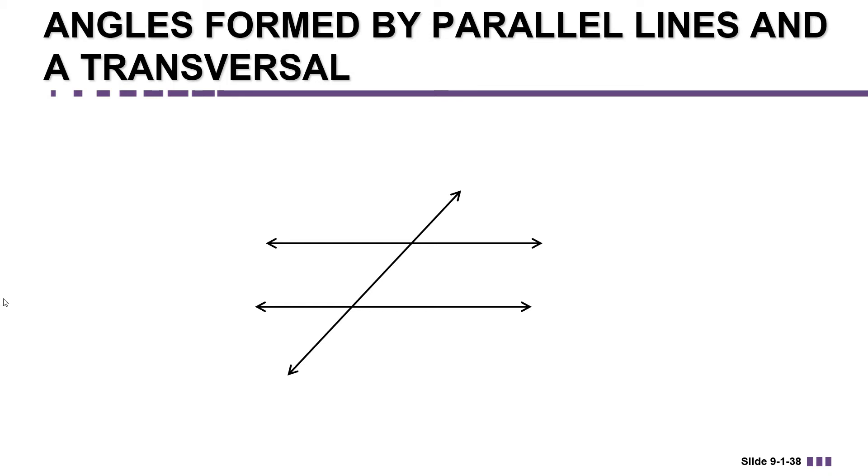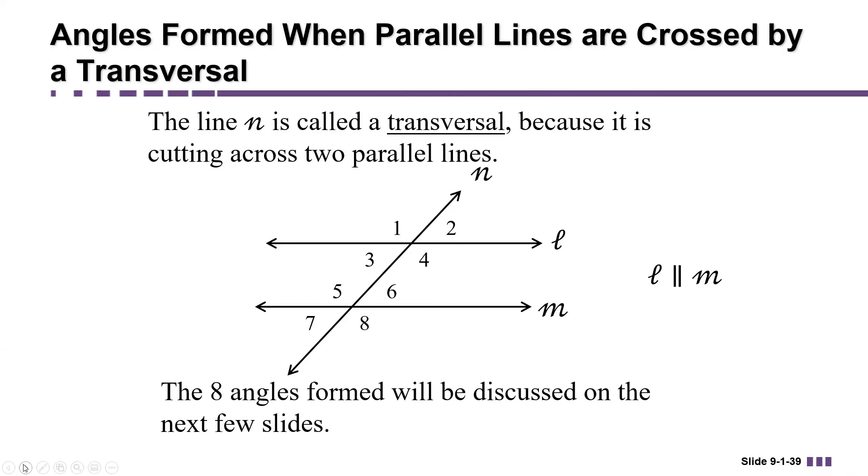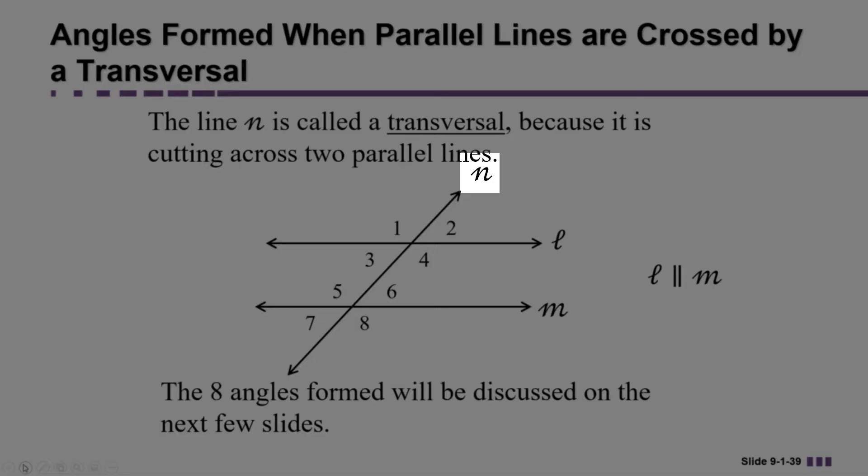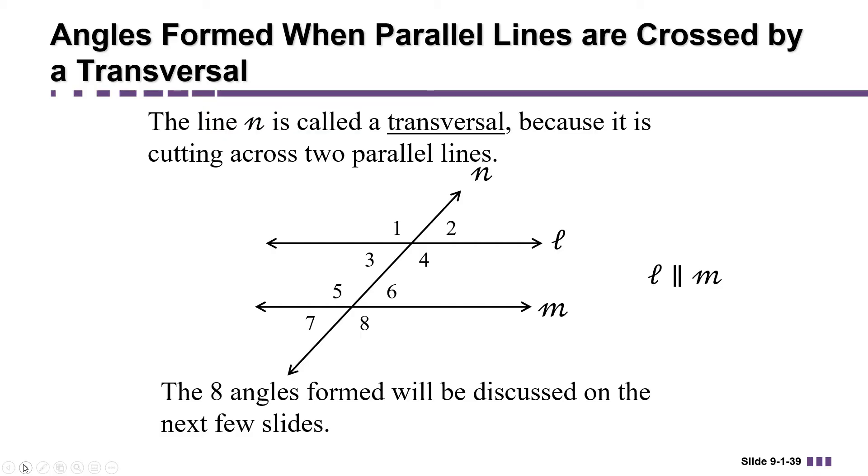In this video we're going to talk about the relationships between angles formed when a transversal crosses through two parallel lines. In this diagram, I've labeled the transversal N. L and M are parallel to each other while the transversal cuts through them. This forms eight separate angles.